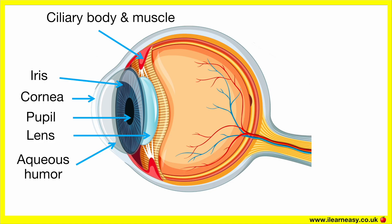Ciliary muscles. The ciliary muscles surround the lens and are connected to the suspensory ligaments. They control the shape of the lens during accommodation — contracting to make the lens thicker for near vision and relaxing to make the lens thinner for far vision. The ciliary muscles also help with fluid drainage from the anterior chamber, as the ciliary body is involved in aqueous humour production and regulation.